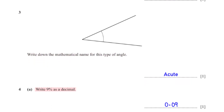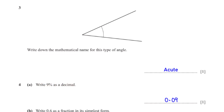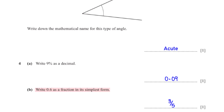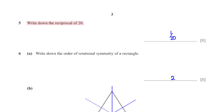Write nine percent as a decimal. When we type nine percent into the calculator we get the decimal equivalent to be 0.09. Write 0.6 as a fraction in its simplest form — when we type 0.6 into the calculator we get the fraction equivalent to be 3 over 5. Write down the reciprocal of 20. The reciprocal of any number is 1 over the number, so in this case that would be 1 over 20.